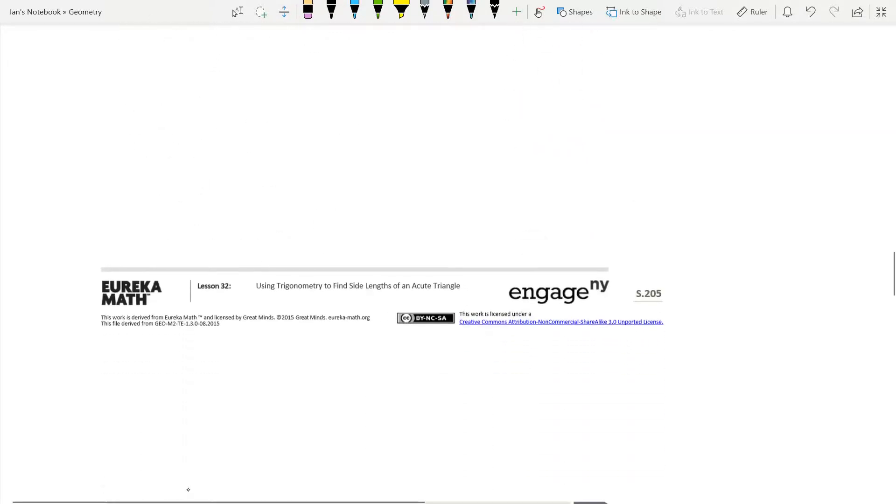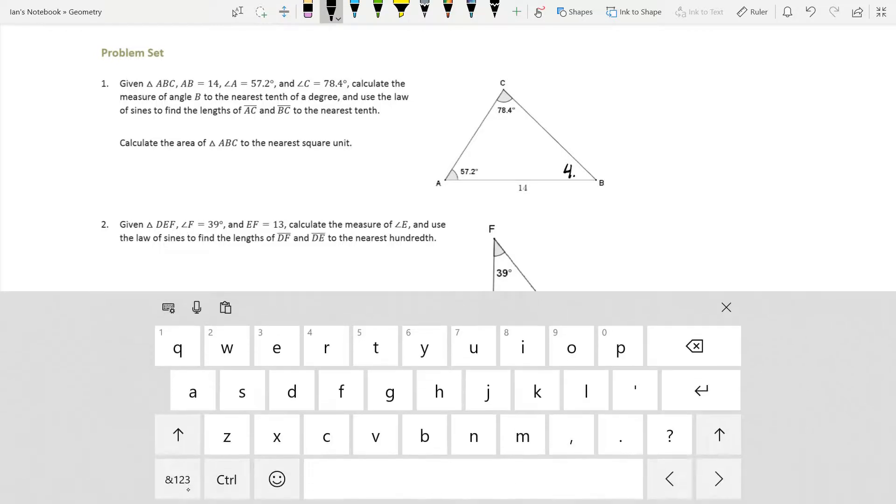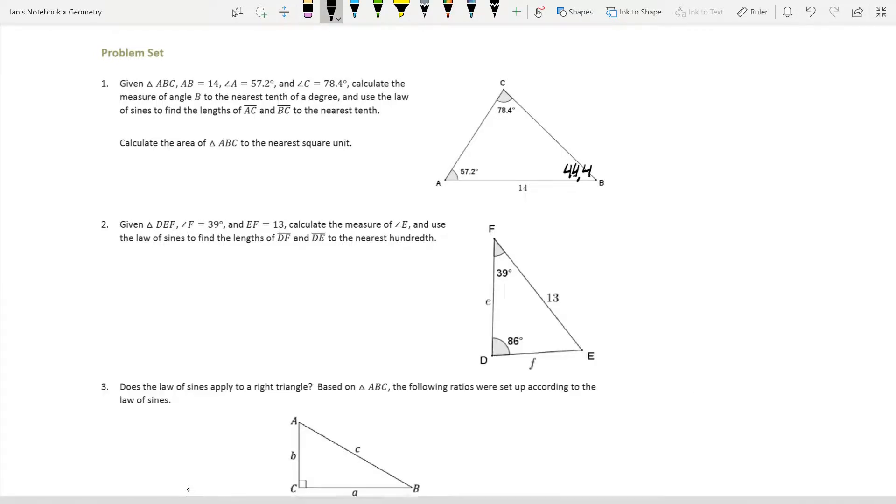So, come back down here. This is the problem set. This is what you guys need to be able to do. So, given this triangle right here, we need to calculate the measure of angle B and use the law of sines to find the length of AC and BC. Well, angle B has to be that, if we add those together, that's going to be 135.6, which puts this at 44.4. So angle B is 44.4 degrees.